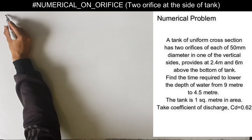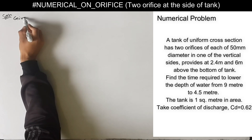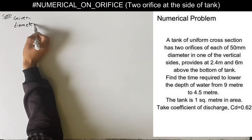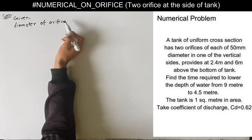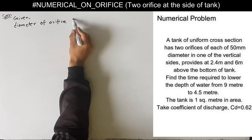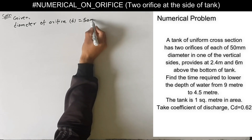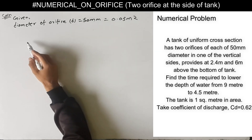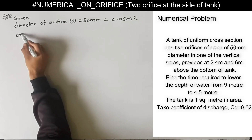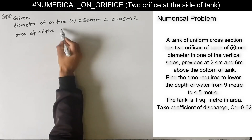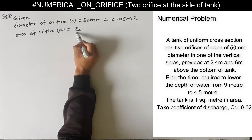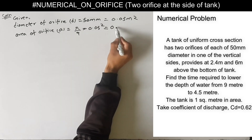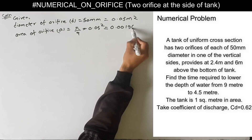Now we write the given parameters from the question. Diameter of the orifice is given. There are two orifices, each having diameter d equal to 50mm. We can convert this in meters: this is 0.05 meter. And we can find the area of the orifice. This is small a equal to π/4 into 0.05 squared. This is 0.001963 meter square.